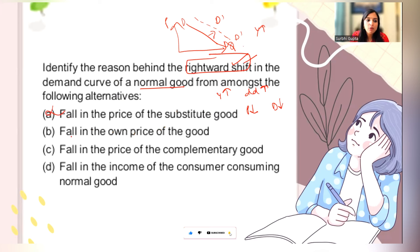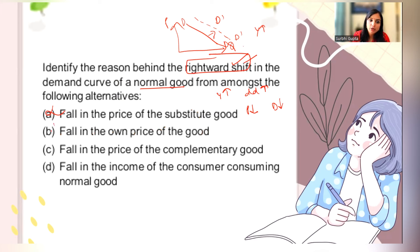A fall in own price will not cause a shift — when own price changes, quantity demanded changes and there is movement along the demand curve, not a shift. A fall in the price of a complementary good, however, will increase your demand. For example, if sugar becomes cheaper, demand for tea increases. Complementary goods like sugar and tea or pencil and notebook work this way.